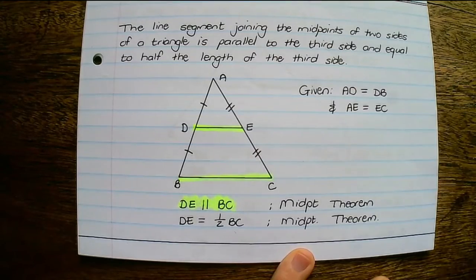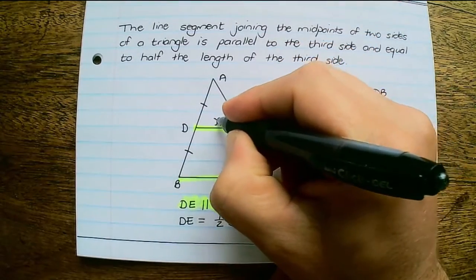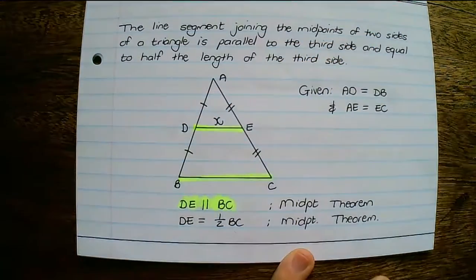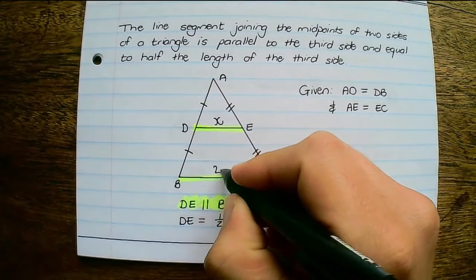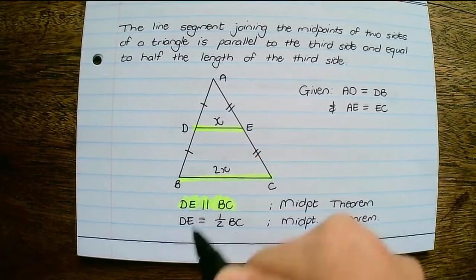So if DE were X units in length then BC would be 2X.